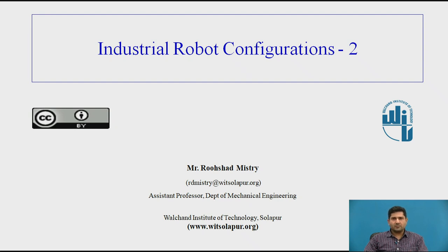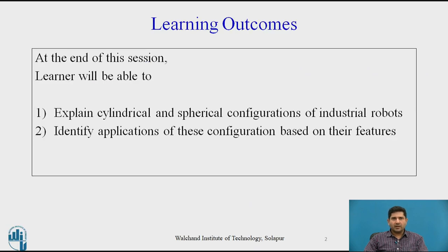In the previous session we looked at the definition of the industrial robot and the Cartesian configuration. We are going to continue from there and discuss spherical and cylindrical configuration. The learning outcomes of this lecture are that you will be able to explain cylindrical and spherical configuration of industrial robots and identify applications of these configurations based on their features.